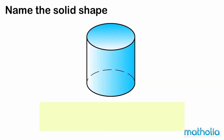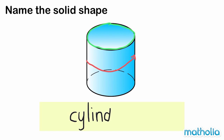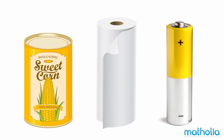This shape has circle faces and a curved face. We call this solid shape a cylinder. These objects have shapes similar to a cylinder.